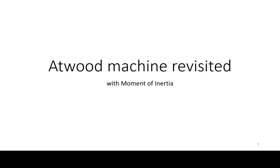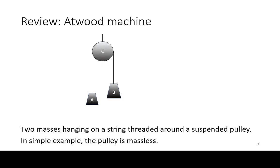This is a quick revisit of the Atwood machine with rotational quantities included. The Atwood machine consists of two masses hanging on a string threaded around a suspended pulley. The simple version of the problem has a massless pulley.